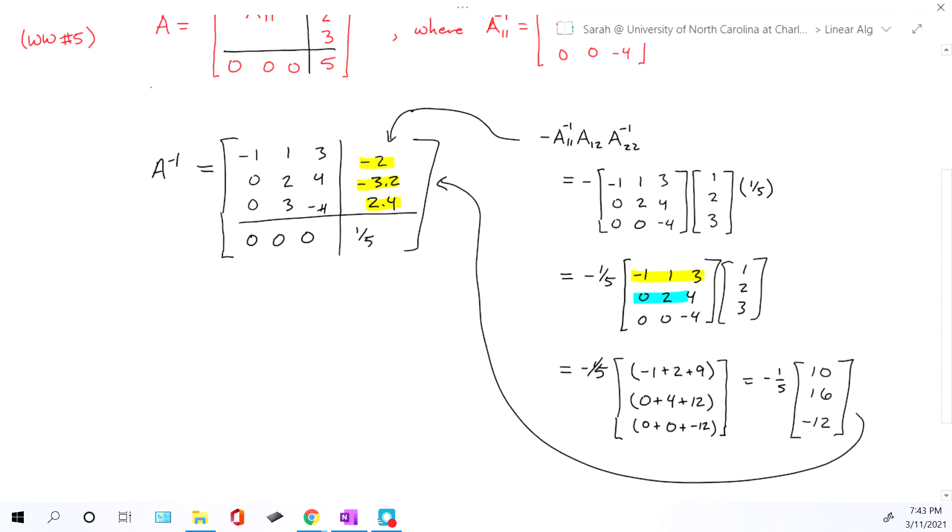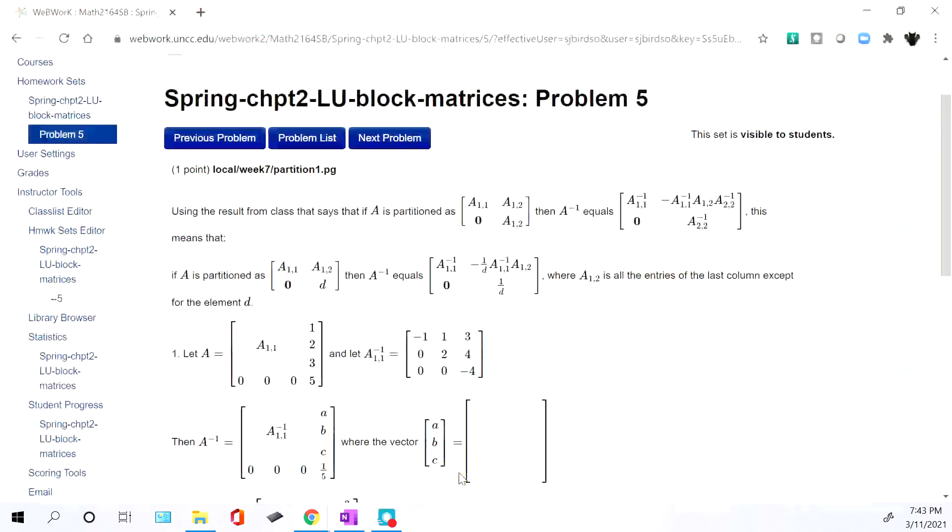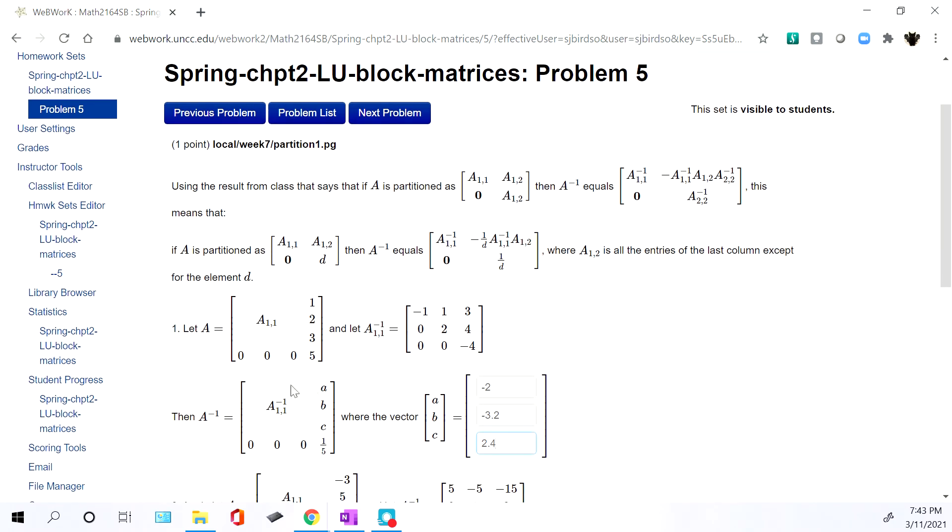These guys right here is what WebWork is asking you to plug in. So I'm going to take those exact same numbers, and we'll plug it into WebWork. So here we would plug in that negative two, we'd plug in that negative 3.2 that we just found, and we plug in the 2.4. Notice we're not plugging in the full matrix because last row is already given. It technically already gives you this first three by three part, even though it's in simple form, because it's right there. So the only thing you're missing is those three values.